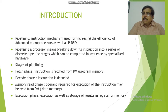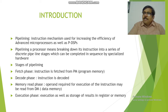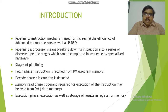There are four stages in the pipelining process. First one is the fetching stage. Second one is the decoding phase. Third one is the memory read phase. Fourth one is the execution phase. In the fetching phase, the instruction is fetched from the program memory. In the decoding phase, the instruction is decoded. In the memory read phase, the instruction operand is retrieved from the data memory. In the execution phase, it executes the instruction and stores the results either in the register or in the memory.